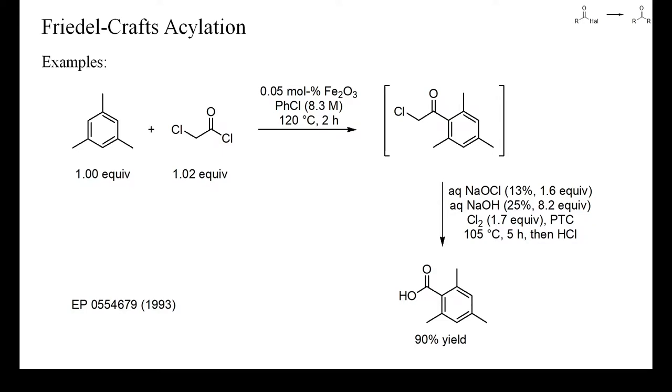Alkylarenes readily react with electrophiles, and Friedel-Crafts acylations of such arenes almost proceed without catalyst. Because polyalkylarenes may isomerize in the presence of strong acids, the acylation of such arenes should be performed with as little catalyst as possible. In the example on this slide, only a small amount of iron oxide was used as catalyst and no isomerization occurred. In this case, the ketone was not isolated, but oxidized directly to the target benzoic acid with a haloform reaction.